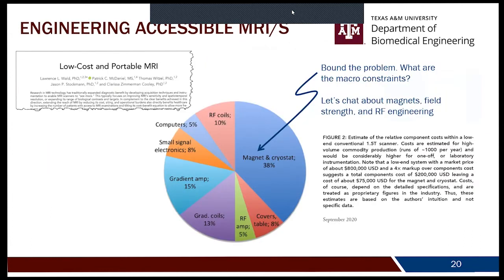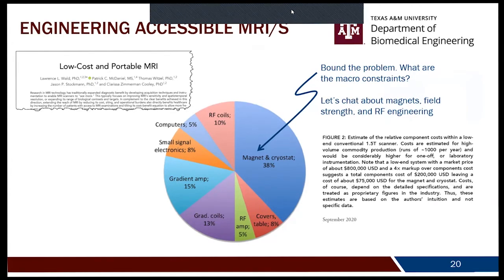As engineers, we're taught to bound problems. Looking at the cost of MRI, over a third sits in the magnet and cryostat. Today we'll talk about access to equipment and access to the power of MRI in the context of magnetic field strength — and how we as engineers can bridge what might be two competing concepts with respect to field strength.